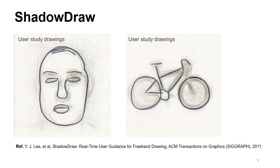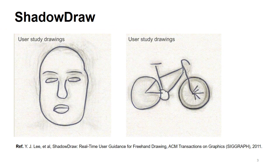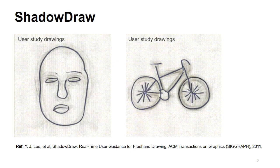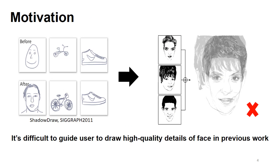The most similar work is Shadow Draw, a system for guiding the free-form drawing of objects. When the user draws, Shadow Draw can dynamically update a shadow image underlying the user's stroke to improve the user's sketch. Although guidance in Shadow Draw can help to draw simple subjects effectively, we find it is difficult to guide users to draw the details of a face. If we blend some portrait drawings with details as guidance, it is difficult to distinguish the object's face the user wants to trace, as the picture on the right side shows.